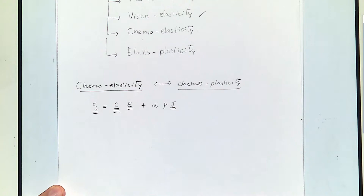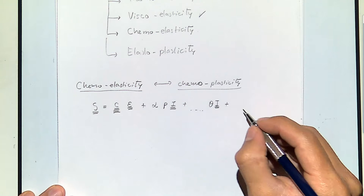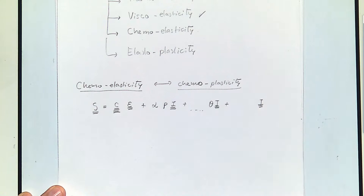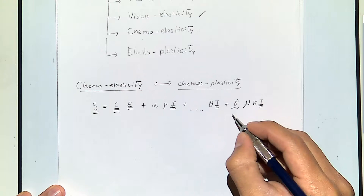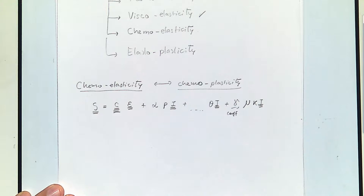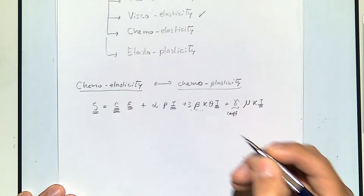We can add the thermal stuff — I'm not going to add it here but we could. What theta represents is a change of temperature. And last, we're going to add one more variable, which we're going to assume is isotropic. It's going to depend on a given proportionality coefficient, similar to a thermal dilation coefficient. That term is K times 3 times beta.